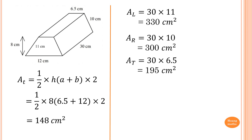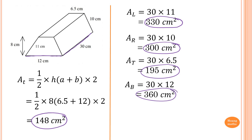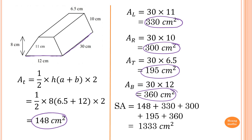What's left is the base of this solid, which is 12 times 30, giving me 360 cm². To find the total surface area, we add all areas together: 148 plus 330 plus 300 plus 195 plus 360, which gives me 1,333 cm².